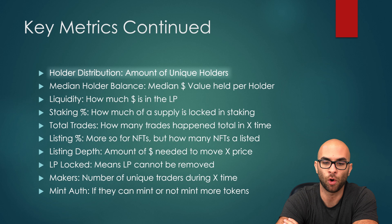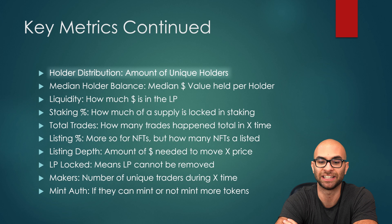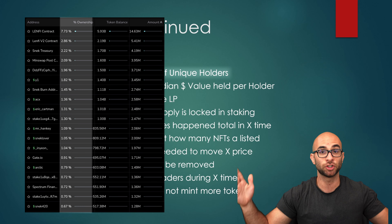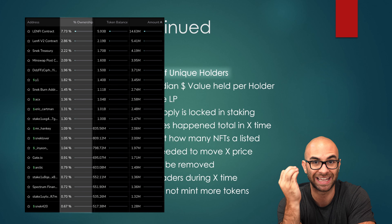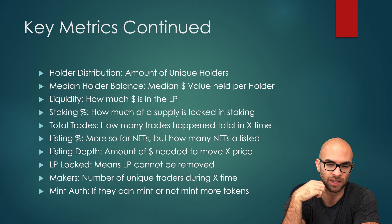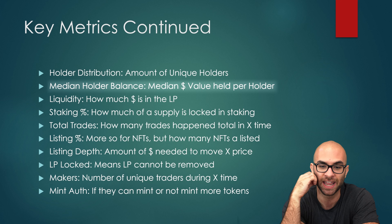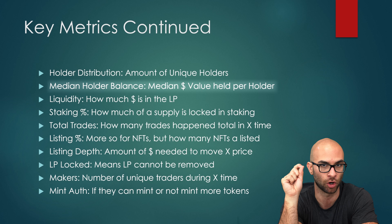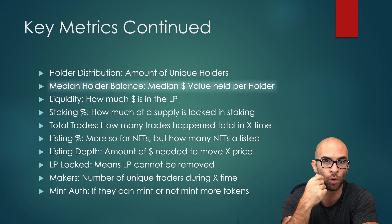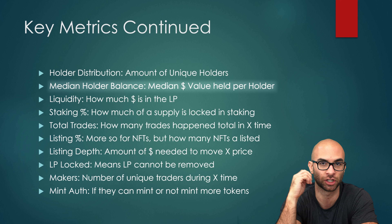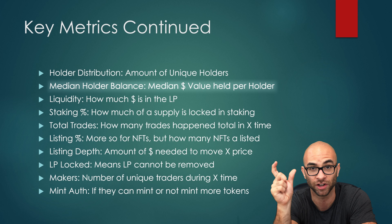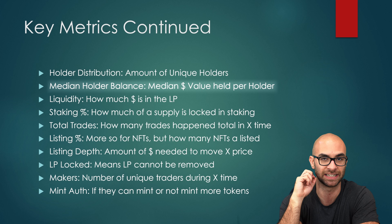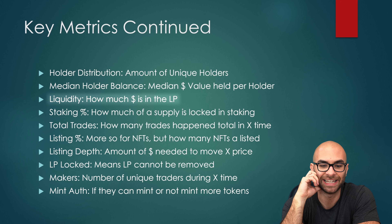Some other metrics include holder distribution — this is how many unique holders there are for a project. The more unique holders, the better, because this means the supply is distributed among more people rather than being concentrated in a handful. The median holder balance is another important thing to check — this is the average or median amount of US dollar value held per holder. Ideally you have a lot of holders with the average holder not owning a lot of the token, which usually leads to the best distributions. Whereas if there aren't as many holders and some holders own a bunch of the token, they can have a significant influence on the price.